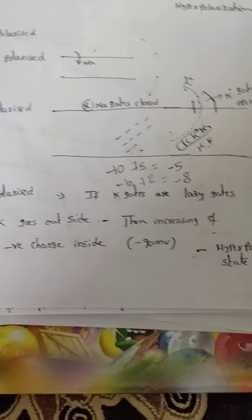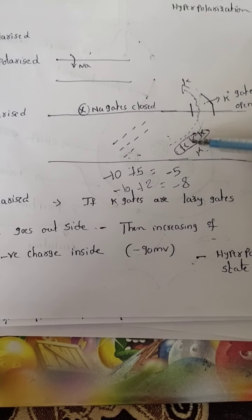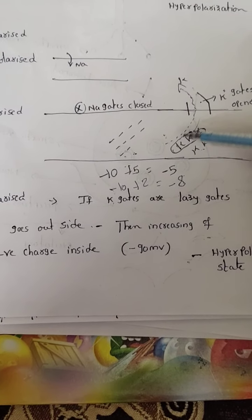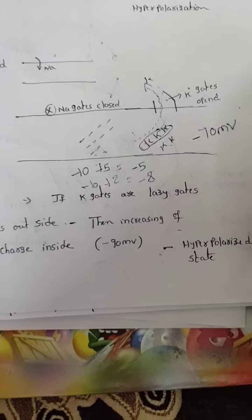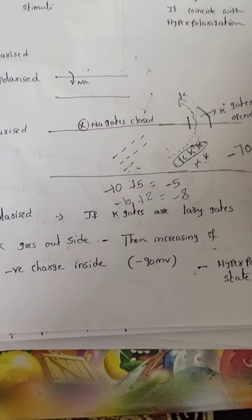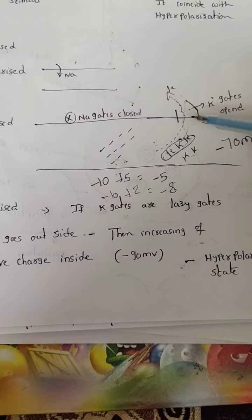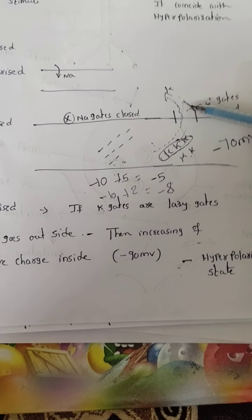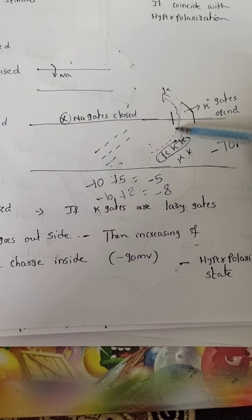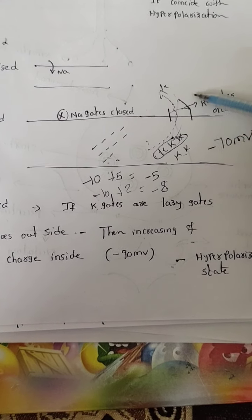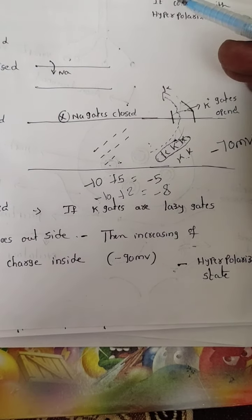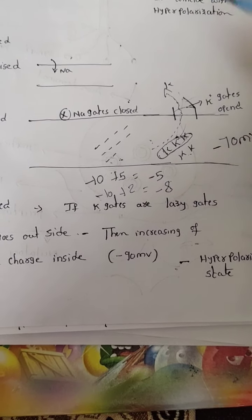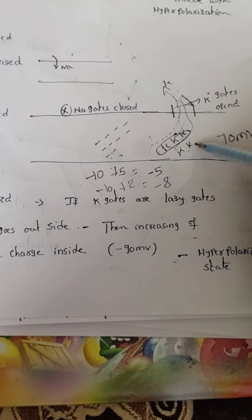Hyperpolarization: when potassium gates are open, some potassium goes outside to maintain minus 70 millivolts. But the potassium gates are lazy gates — after enough potassium goes out they want to close but they close slowly, step by step, lazily. So even more potassium goes out during that slow closing, causing negative charges inside to increase even further.